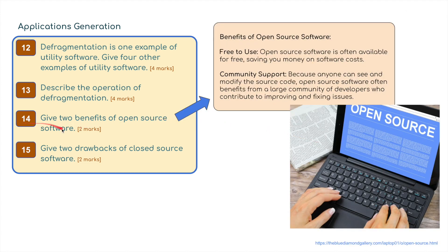Question fourteen: give two benefits of open source software. Open source software is often available for free, saving money on software costs and monthly or annual subscriptions. Community support: because anyone can see and modify the source code, open source software benefits from a large community of developers who contribute to improving and fixing issues. If you get stuck, you might find free technical support or solutions in community forums.